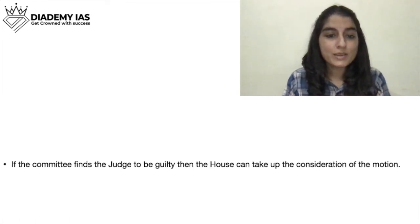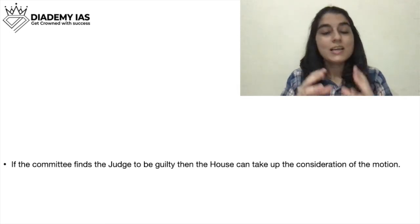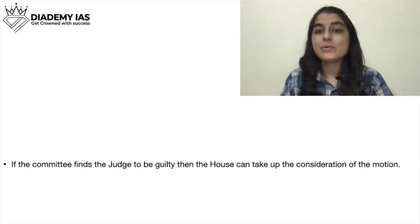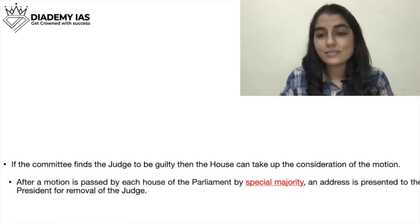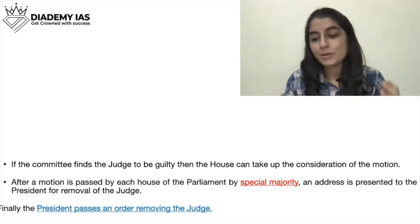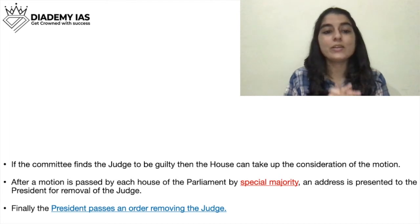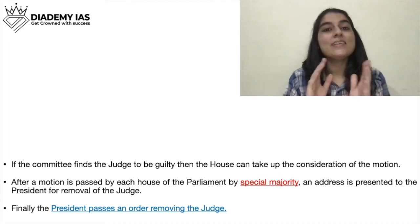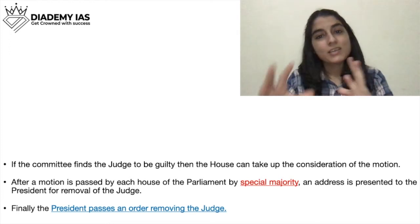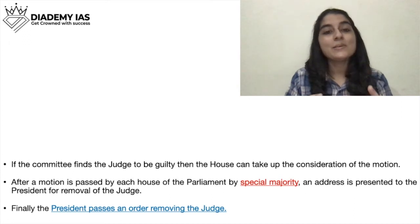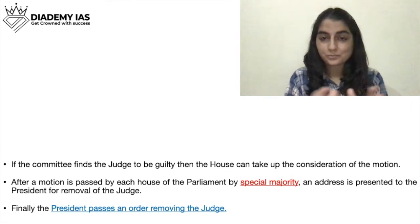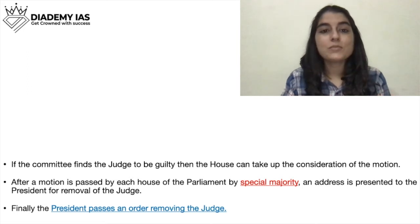If the committee finds the judge to be guilty of proved misbehavior or incapacity, only then will that house consider the motion. When the motion is passed by each house with a special majority, it is presented to the President, who then orders the removal of the judge. This removal process is very difficult — both houses are involved, a three-member committee investigates, and a special majority is required. This is about the removal of judges.